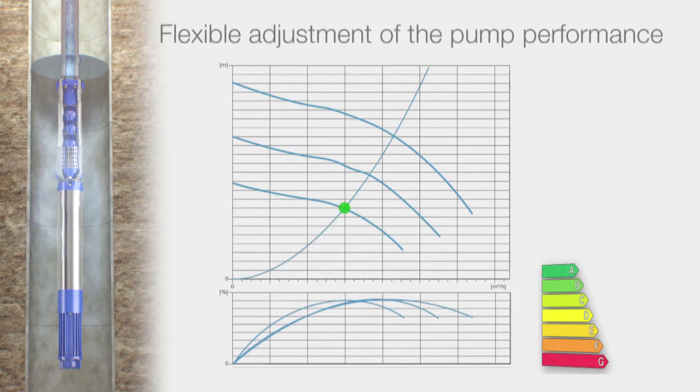Number 3 – Flexible adjustment of the pump performance. The system solution of an IPM motor also includes a high efficiency frequency converter, with which the rotational speed of the motor and the pump performance can be flexibly adjusted, completely without any losses.